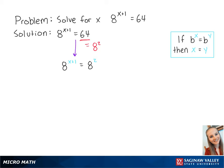Now that x plus 1 and 2 share the same base of 8, we can write this as x plus 1 equals 2. If we subtract 1 from both sides of the equation, we get x equals 1. This is the final answer.